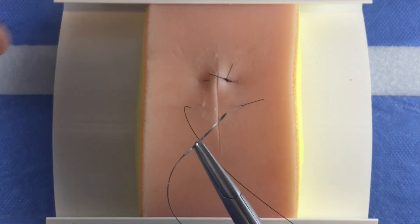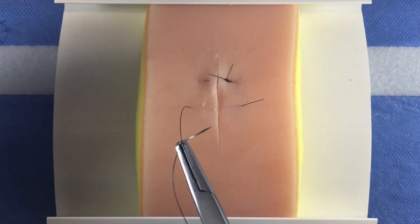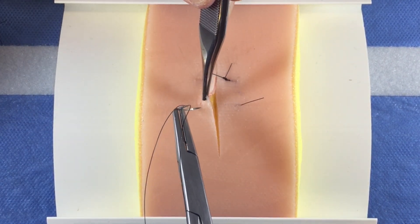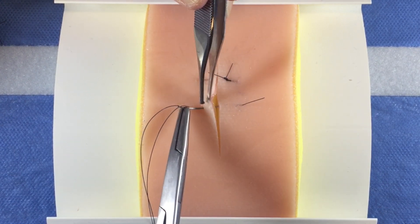Load your needle backhand. Note, you may be able to do this forehand by repositioning your body. Grasp the skin edge on the side you just exited.